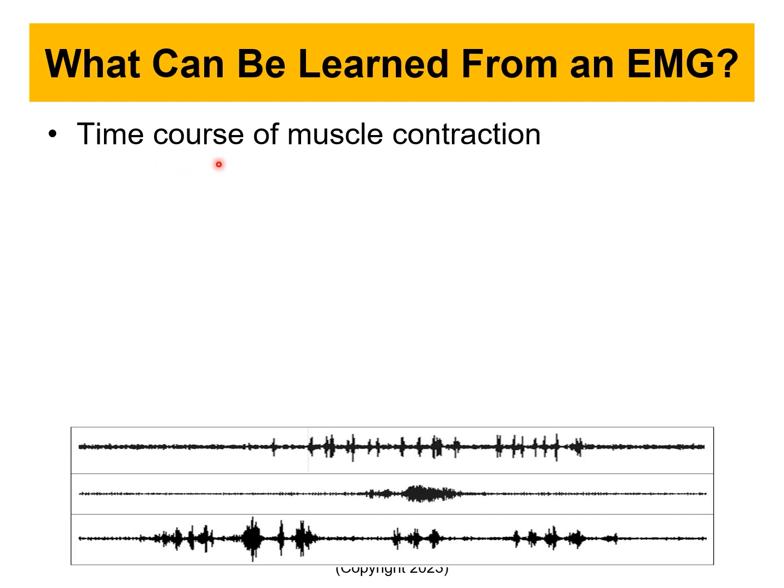The first thing you can look at is the time course of muscle contraction. When we perform a motor task, it's not just the muscle activity — it's the sequence of muscle groups acting. You can tell which muscle is acting when. Because of the advancement in wearables, we have a lot of sensors placed everywhere around the body. This is especially important not for healthy subjects but for someone with an amputation — you can use the sequence of muscles to control a robotic arm.